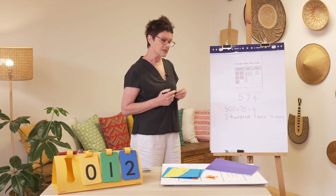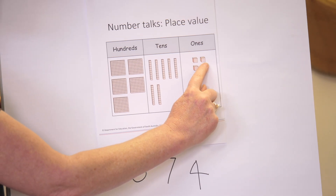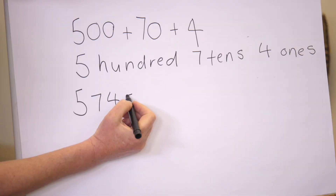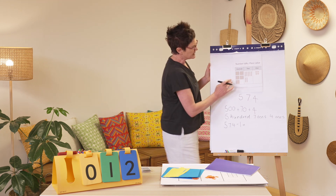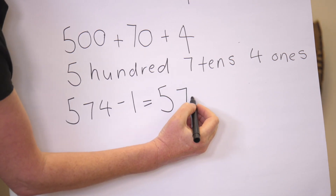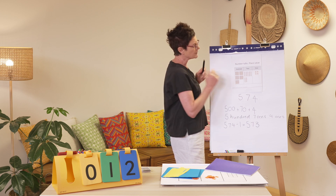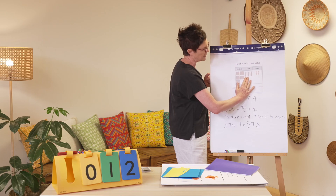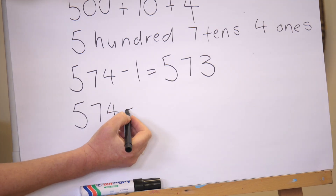My last questions: what if I changed some things around? What if I took away one one — what will my number be? Five hundred and seventy-four take away one. We might also write this as: what is one less than five hundred and seventy-four? One less than five hundred and seventy-four is five hundred and seventy-three. And what if I took away two tens, or twenty? Five hundred and seventy-four take away two tens.